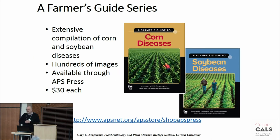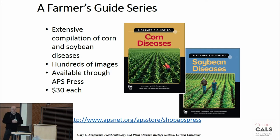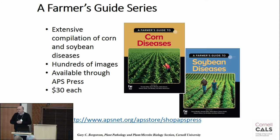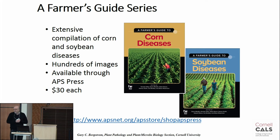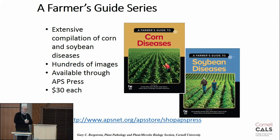In addition, one of the best investments you could make if you're a corn and soybean grower is the APS Press. For a $30 investment each, you can get really wonderful, concise, picture-rich manuals on corn diseases and soybean diseases in a very farmer-friendly format. I recommend those as really excellent resources.